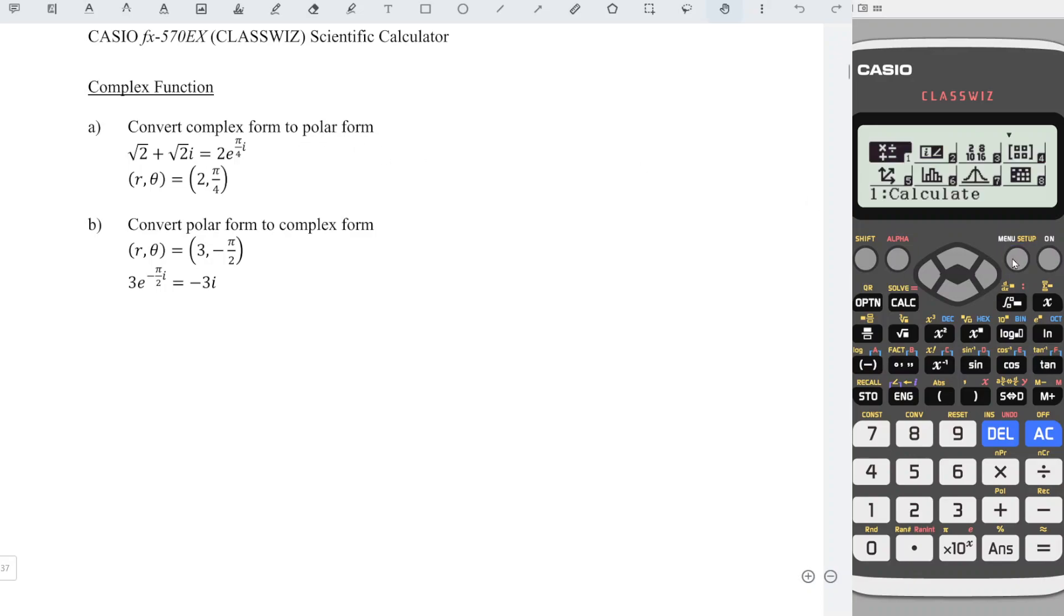First, we press menu, look for the second function, the complex function. And we should key in the complex number first, so we have √2 plus √2i.